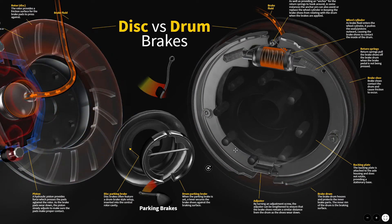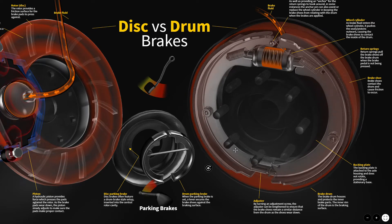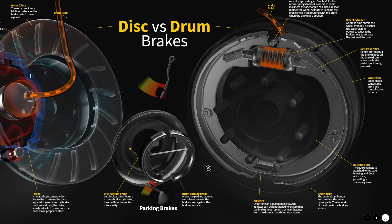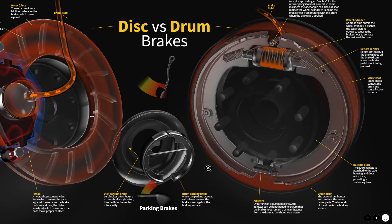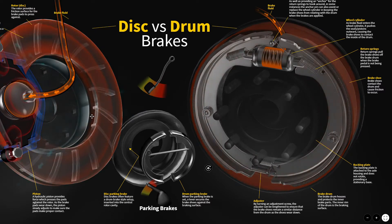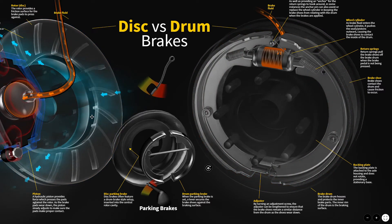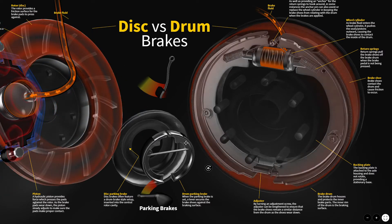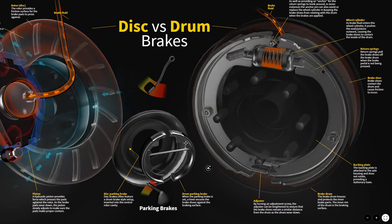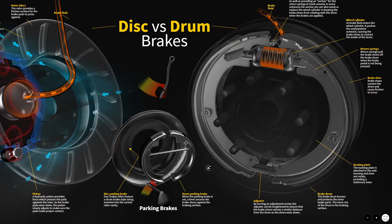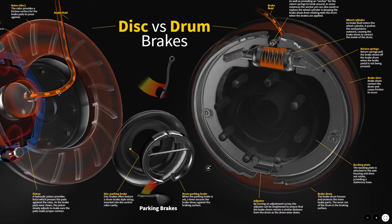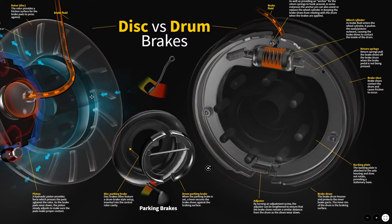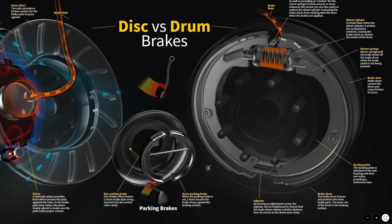Modern disc brakes, when incorporating a parking brake, most likely use a small set of brake shoes mounted inside the rotor in a drum that's machined into that rotor — just for parking brake applications. That lining is very thin and normally shouldn't wear out unless someone is abusing their parking brake or driving with it on. To access it, you would have to remove the rotor, and you can see the parking brake components inside here to service those parking brake shoes if needed.